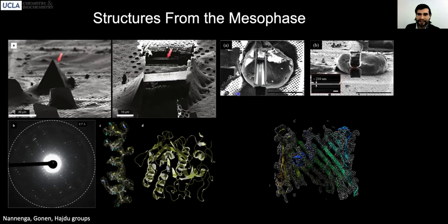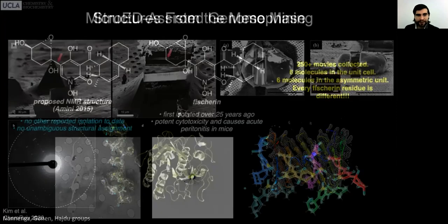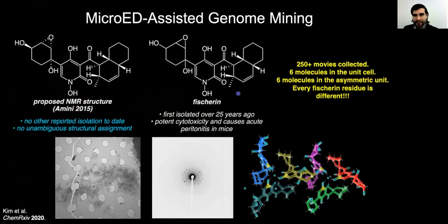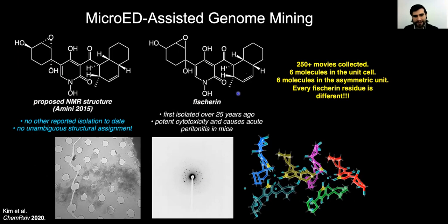Now, in many cases, you're not actually able to grow crystals large enough to mill, and you still have a tremendous degree of heterogeneity on the nanoscale. This is an example of a small molecule. In this case, the small molecule of Fischerin has been postulated to contain the structure shown on the left.